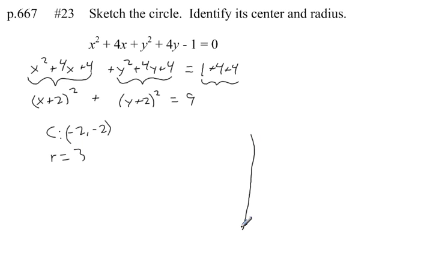Let's make a sketch of this. I'll get my x and y-axes over here. Center at negative 2, negative 2. The radius is 3. If I go 3 units in each direction, I can sketch my circle. Let's make a rough sketch of that circle going through those points. There's a rough sketch with center negative 2, negative 2, and radius 3.